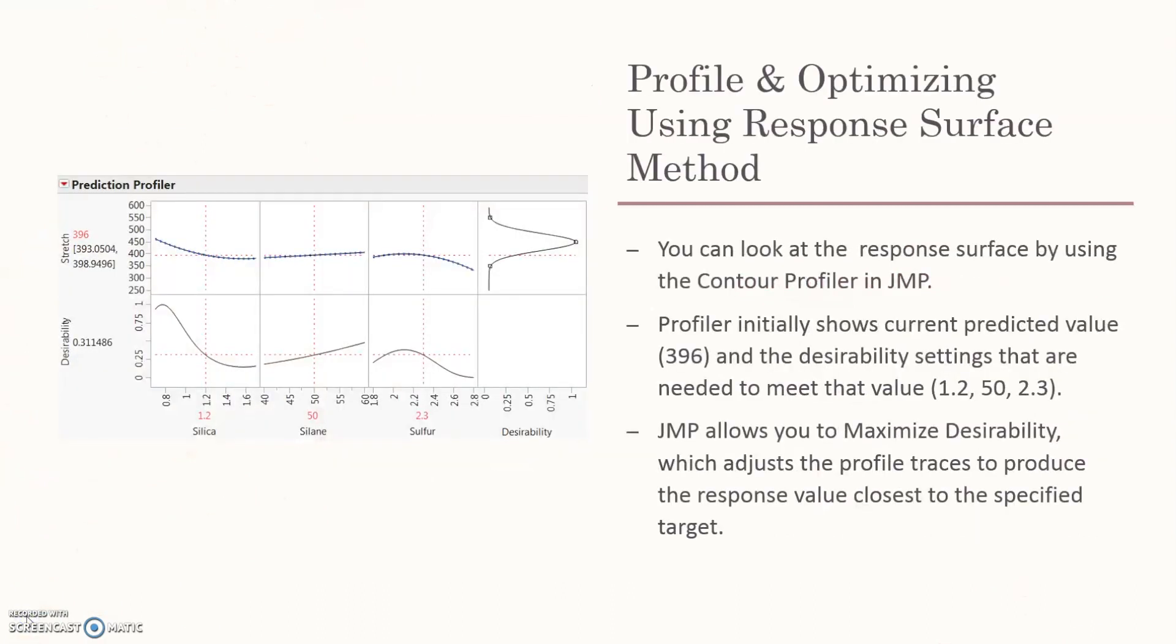The last thing we're going to talk about before jumping into JMP is profiling and optimizing using response surface method. You can look at the response surface by using the contour profiler in JMP. The profiler initially shows current predicted values and the desirability settings needed to meet that value, which are given to you once you run your experiment.